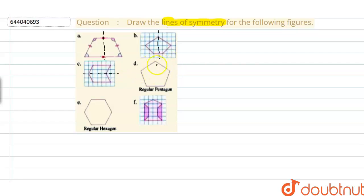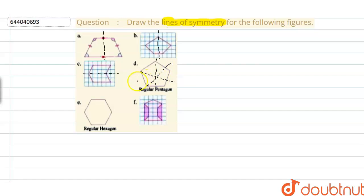In this next figure, it is a regular pentagon, meaning all the sides of this figure are equal. If we draw lines of symmetry for this one, clearly this line acts as a line of symmetry because it divides the pentagon into equal halves. Similarly, this line, this line, this line, and this last line also divide this figure into equal halves. So these are the five lines of symmetry for a regular pentagon.